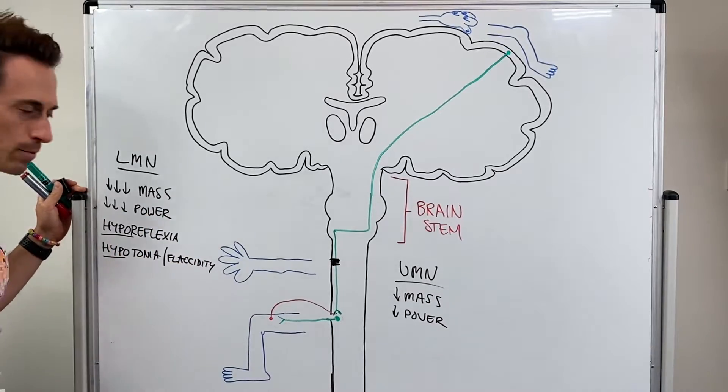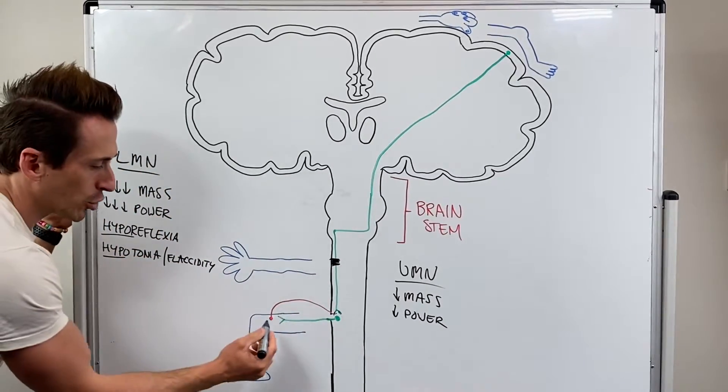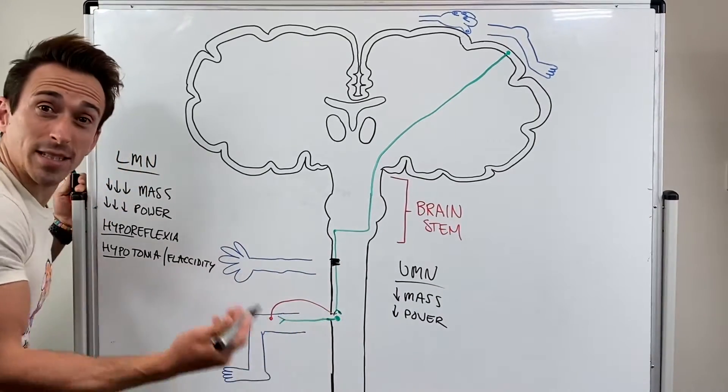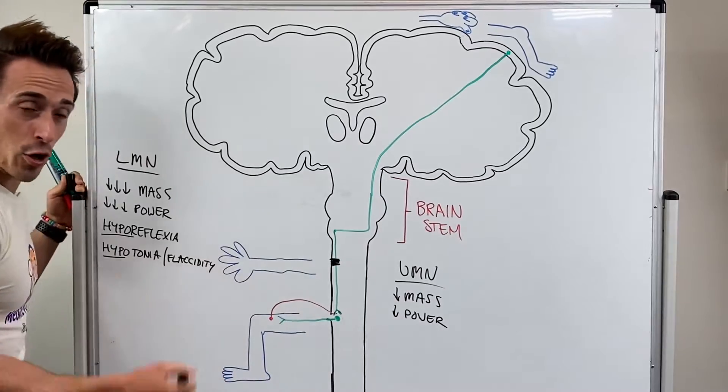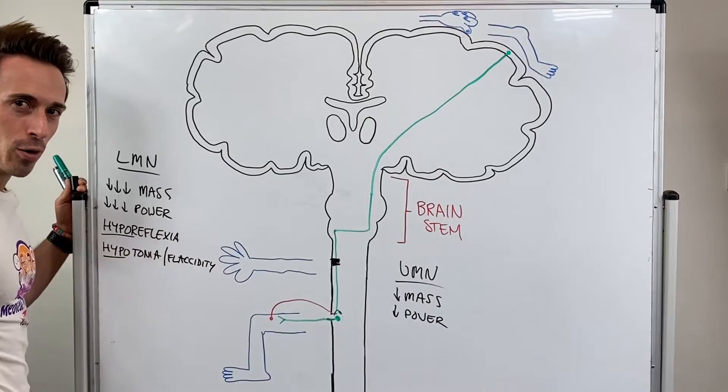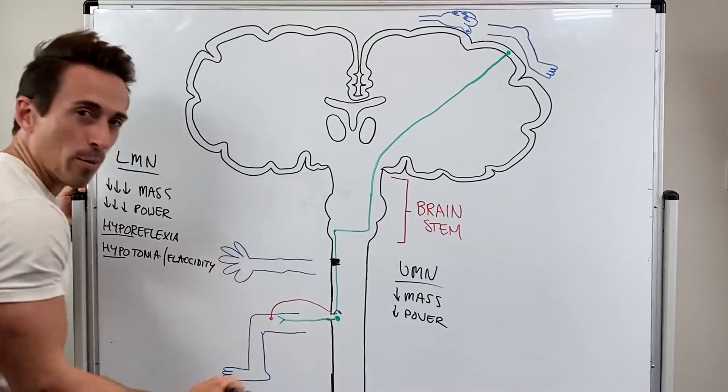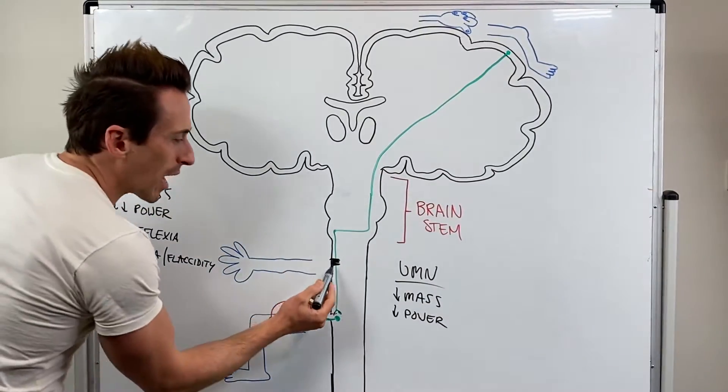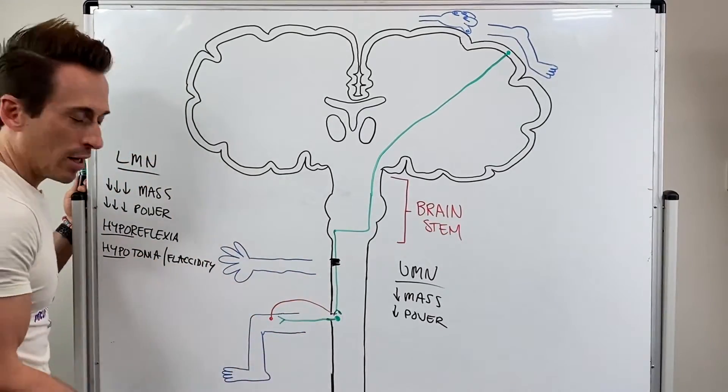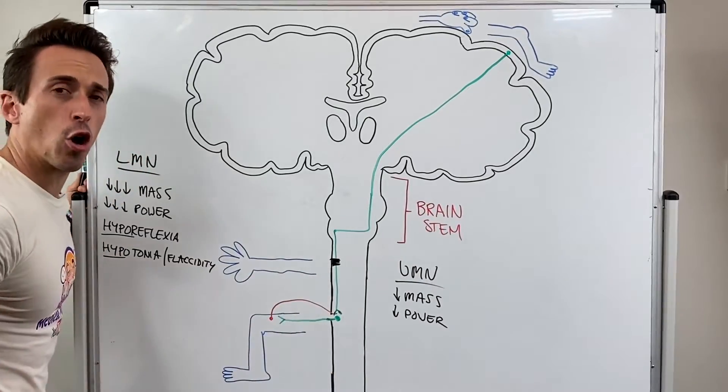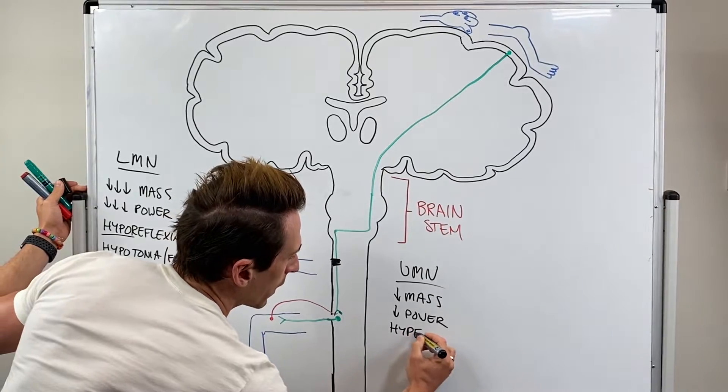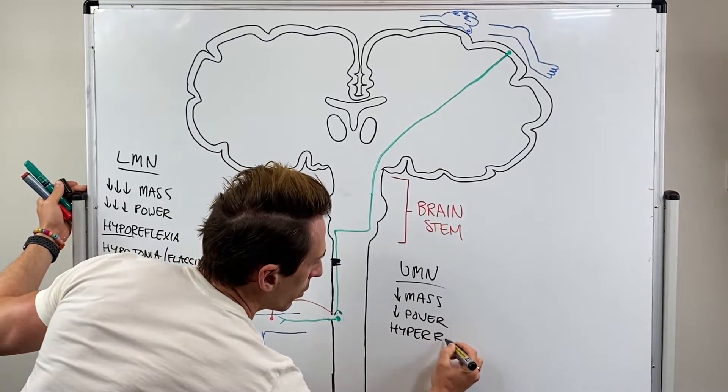What about the reflexes? I hit the patella tendon, stretches the quadricep, sends the sensory information in, stimulates the lower motor neuron because it's intact and the reflex occurs. But remember I told you that the upper motor neuron plays a very important role in inhibiting the lower motor neuron. It modulates it, but with this upper motor neuron no longer present or no longer working properly, you can't inhibit it. So this reflex works in overdrive, so you get hyperreflexia, an exaggerated reflex.